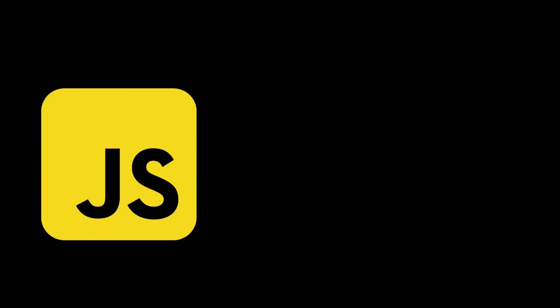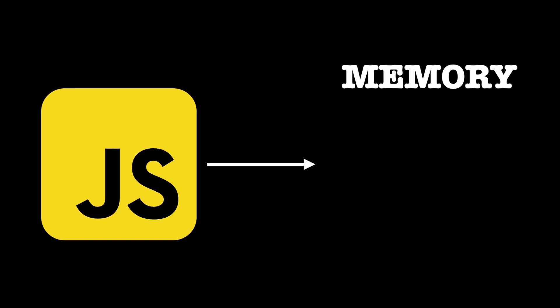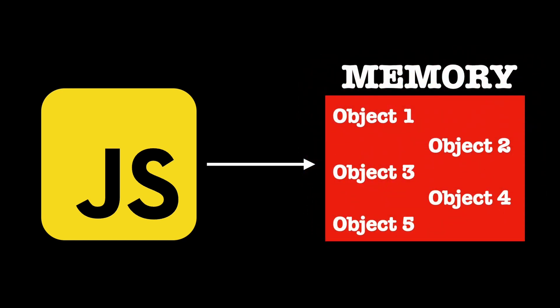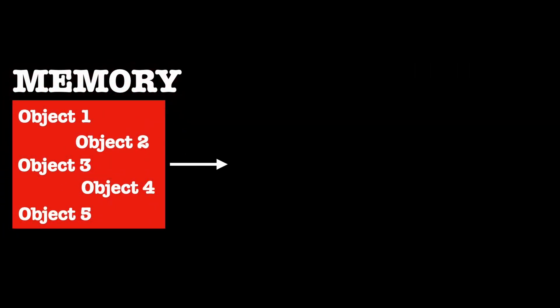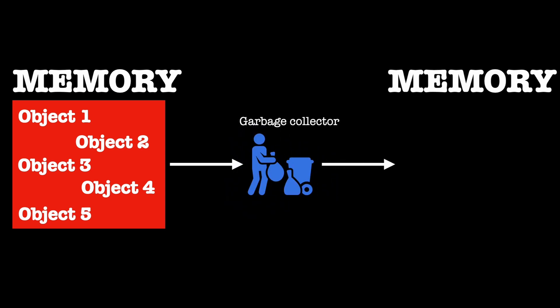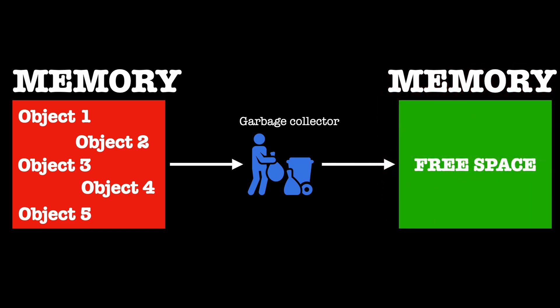In JavaScript, a memory leak occurs when a program continues to hold references to objects that are no longer needed, preventing those objects from being garbage collected. Garbage collection is the process by which programming languages like JavaScript automatically reclaim or free up memory occupied by objects that are no longer in use, making it available for other parts of the program.